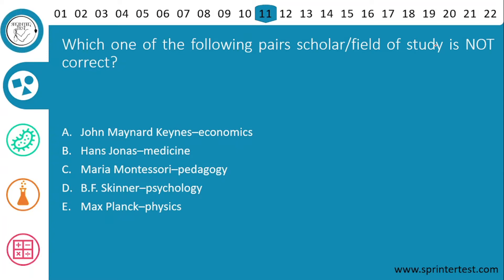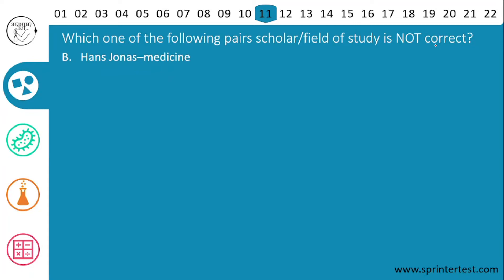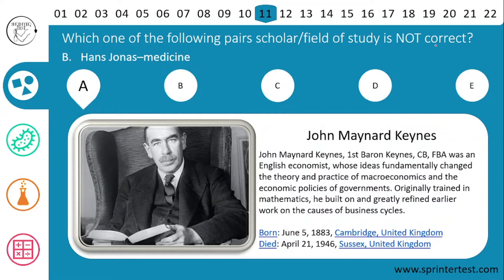Time's up. The correct answer is B, Hans Jonas. Let's look at each person, starting with John Maynard Keynes. He was the first Baron Keynes, an English economist whose ideas fundamentally changed the theory and practice of macroeconomics and government economic policies. Originally trained in mathematics, he built on earlier work on the causes of business cycles. So his name matches his field.